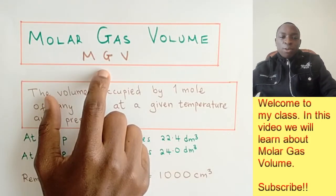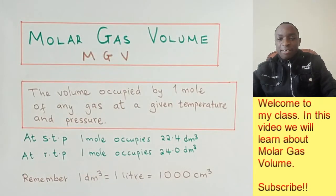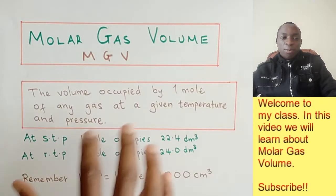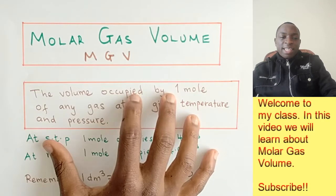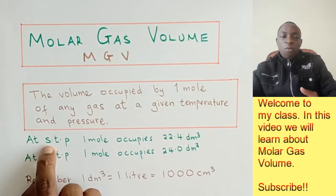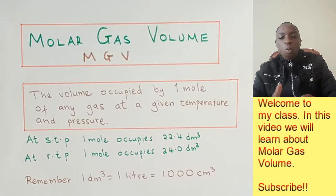The molar gas volume is the volume occupied by one mole of any gas at a given temperature. In my previous video, we talked in detail about this molar gas volume. At standard temperature and pressure (STP), one mole of any gas will occupy 22.4 decimeter cubed. At room temperature and pressure (RTP), one mole of any gas will occupy 24 decimeter cubed.